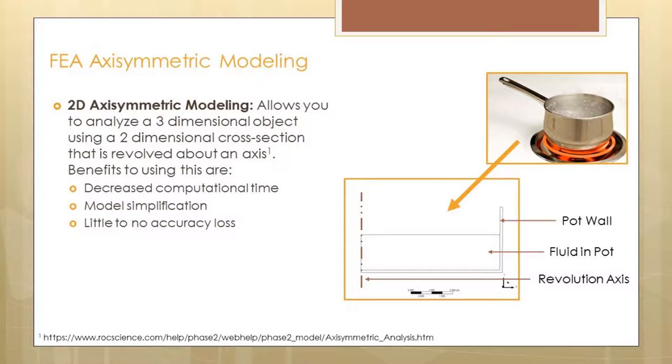The reason we did that is because in FEA that decreases our computational time, but it does not limit our accuracy. It gives us the same value as if we had modeled the entire pot, but it also simplifies the modeling, which actually makes it more accurate.